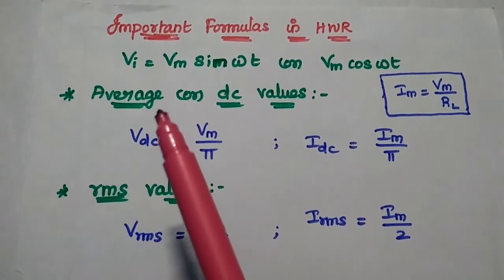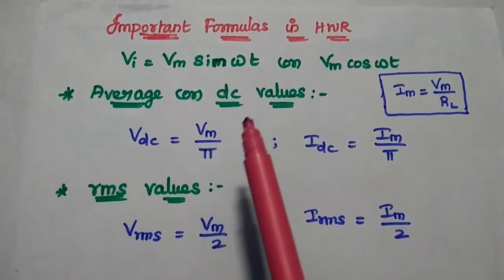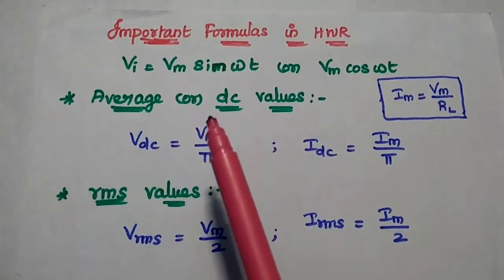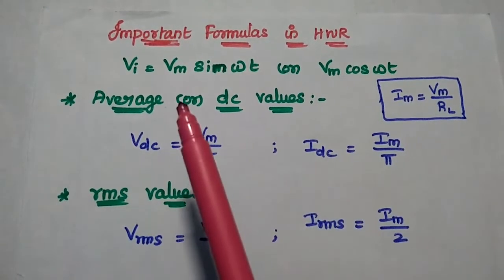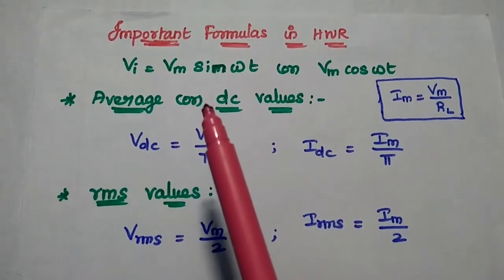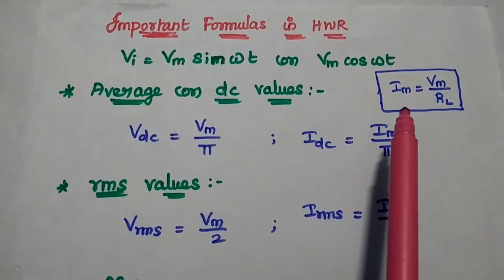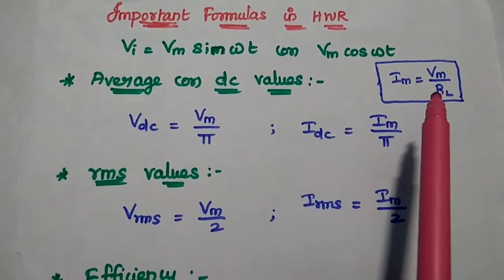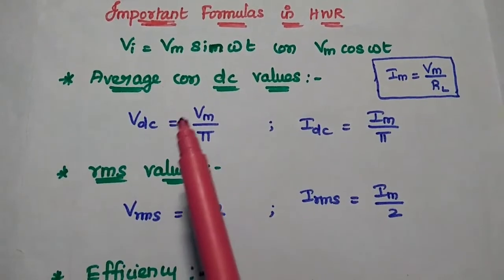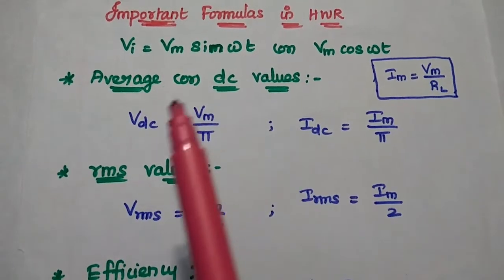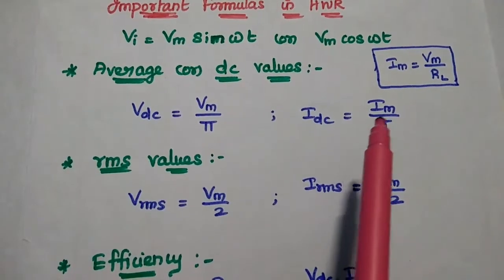The input AC signal given to the rectifier circuit is represented as Vm sin(ωt) or Vm cos(ωt). Here Vm is the maximum voltage at the input side. From this we can obtain the maximum current Im = Vm / RL. The average DC values are: Vdc = Vm/π and Idc = Im/π.